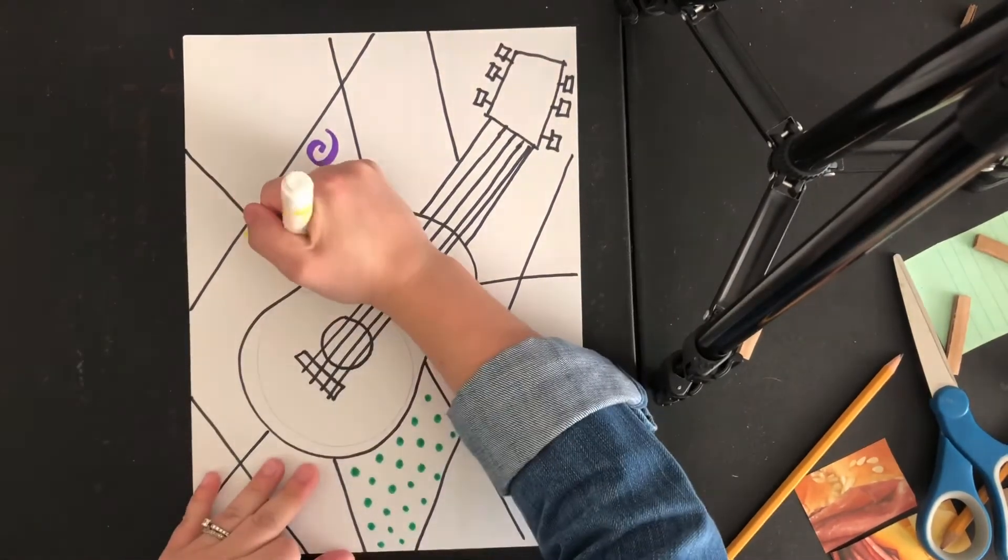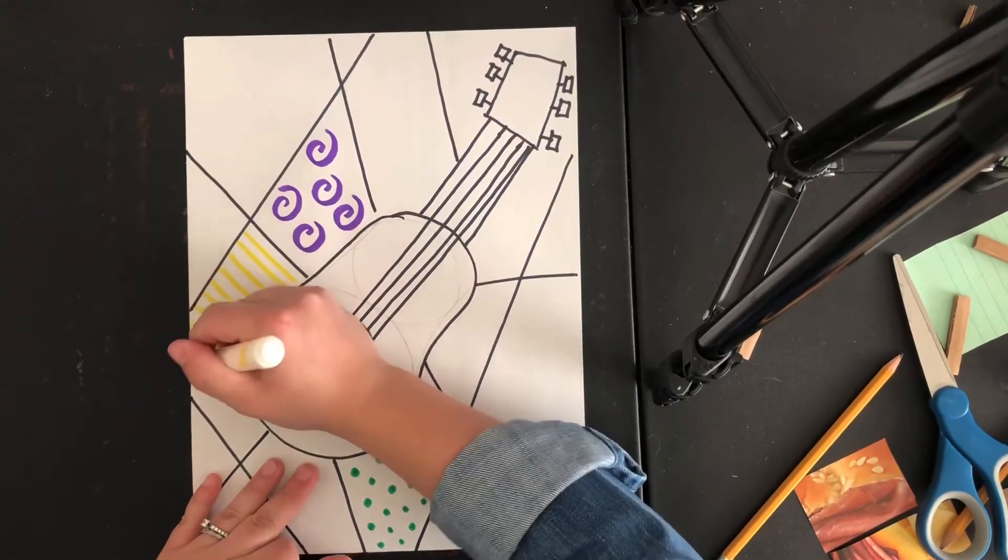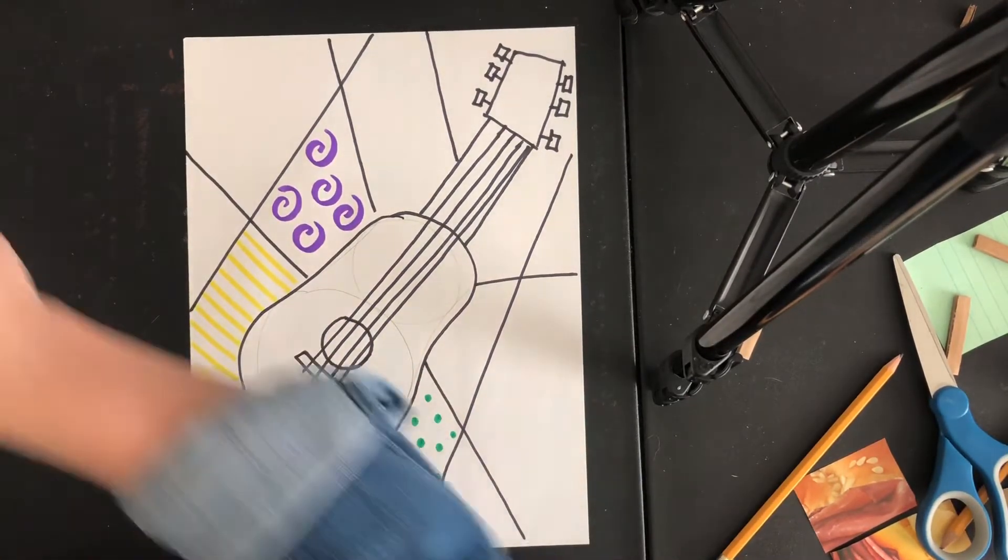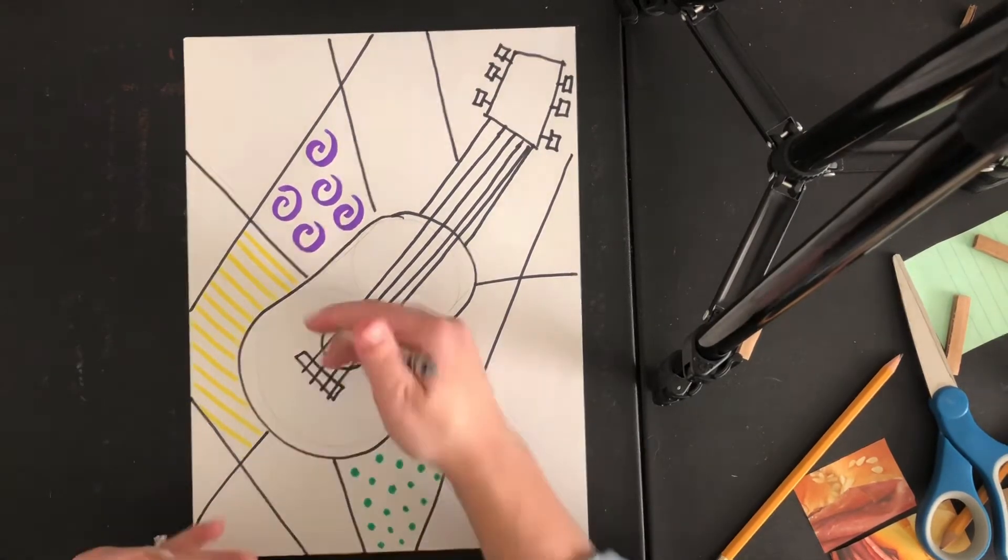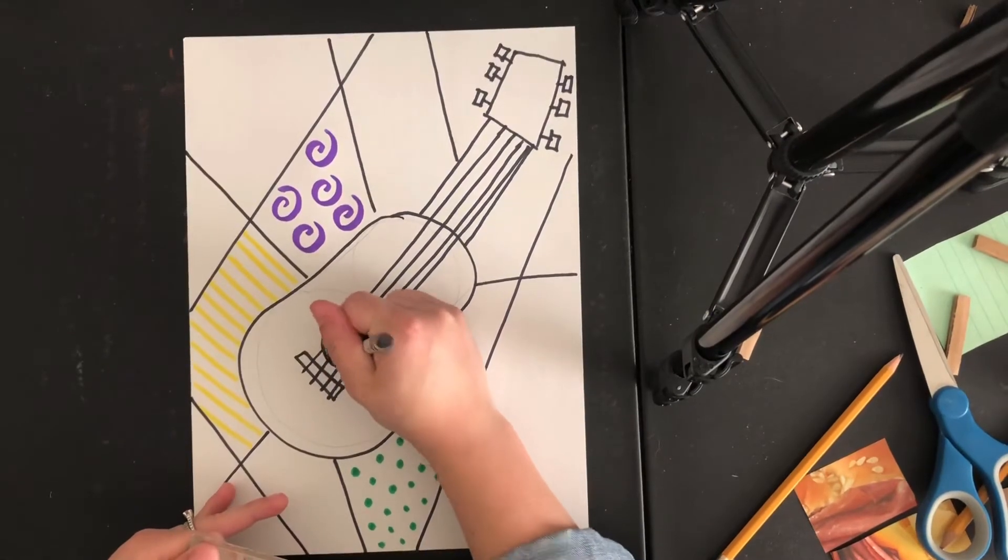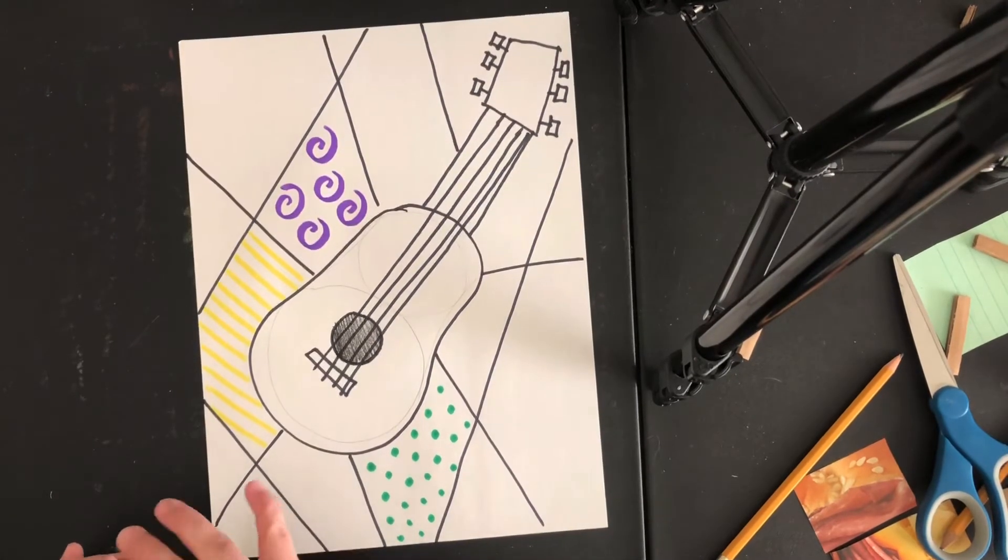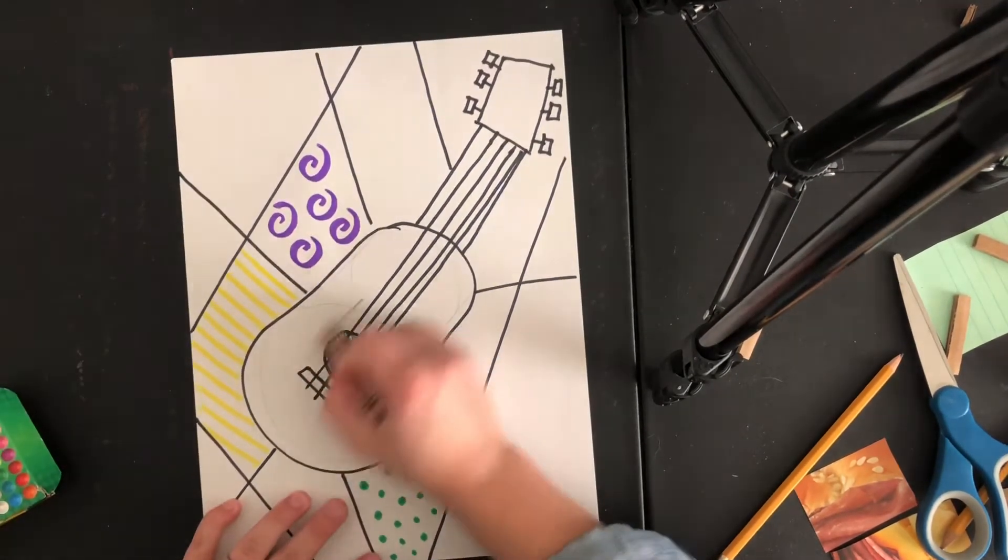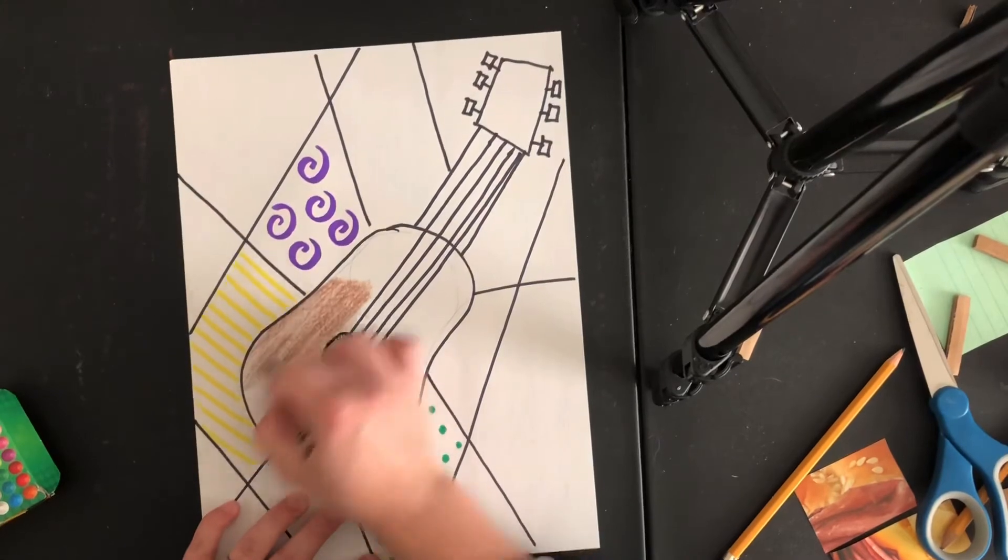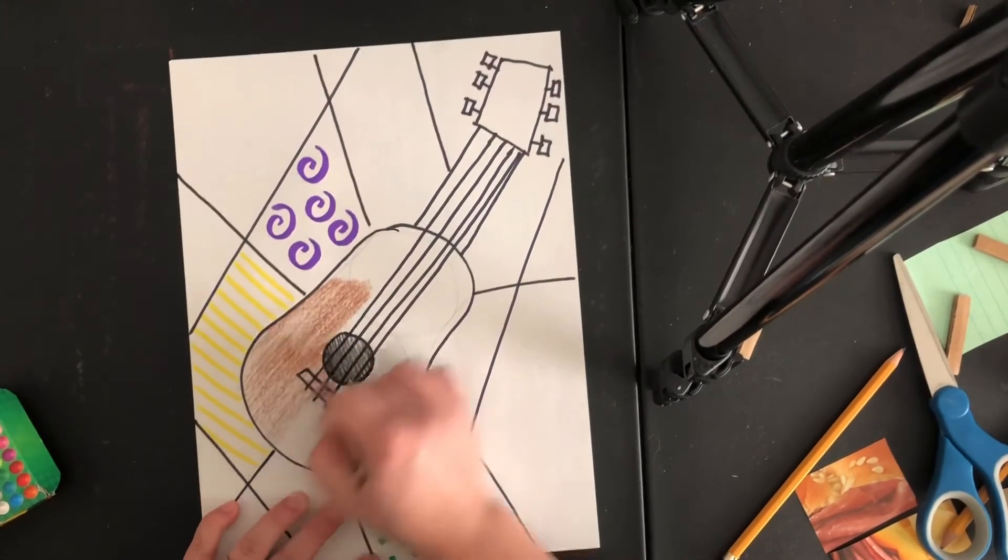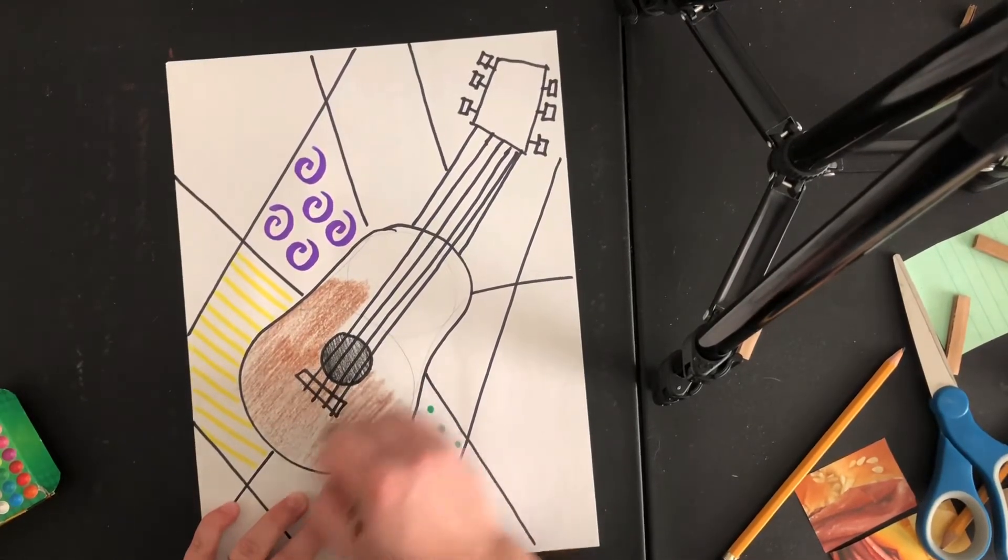So using different colors. You can create stripes, polka dots, swirls. And then of course, you could always color in your guitar. So I might use some crayon. You could mix mediums together, so using crayon and marker. You could use paint. It's really up to you how you want to create your guitar collage.